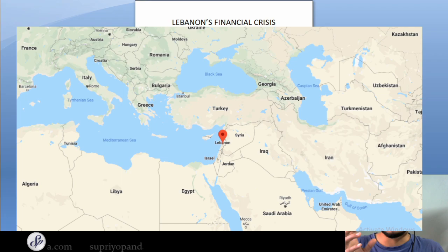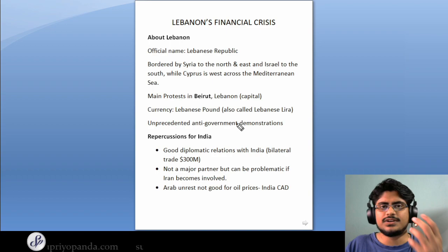You will understand the critical location of Lebanon — where it is located in between Europe and the Middle East. It was a very important channel, and I'll take a deep dive into why this is important later on.